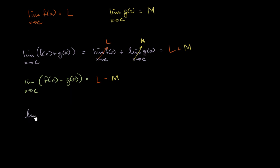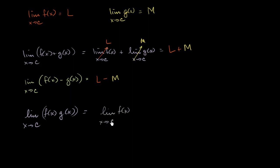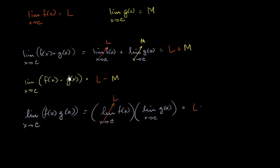What happens if you take the product of the functions? The limit of f of x times g of x as x approaches c is going to be equal to the limit of f of x as x approaches c, times the limit of g of x as x approaches c. This is a fairly intuitive property of limits, and it's just going to be equal to L times M.